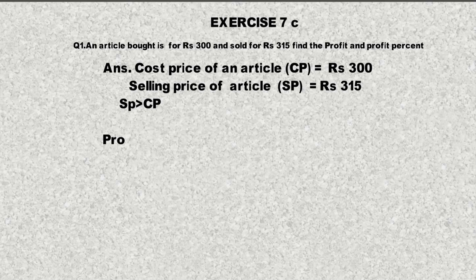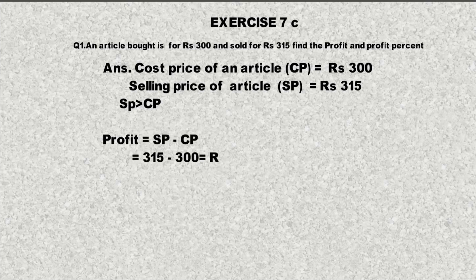First of all, we can see that SP is greater than CP — selling price is greater than cost price. So there is a profit. Profit is equal to selling price minus cost price, which is 315 minus 300, so profit equals 15 rupees.